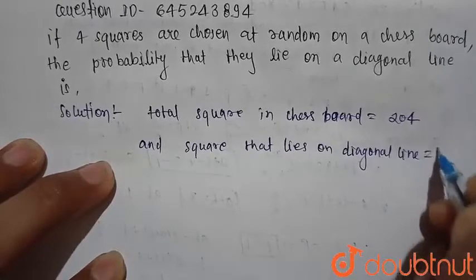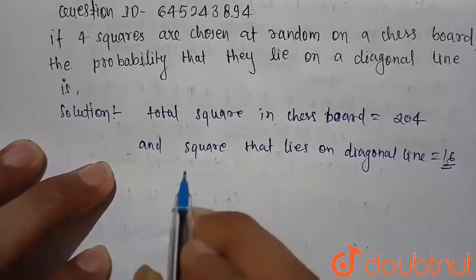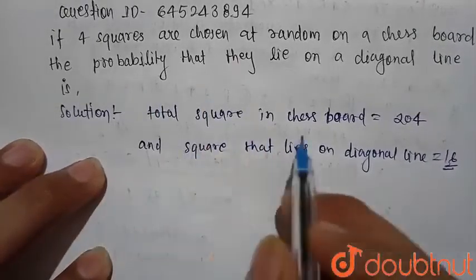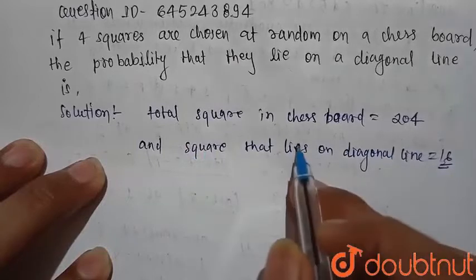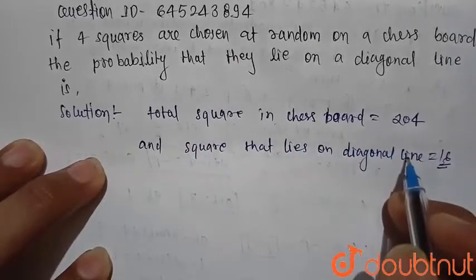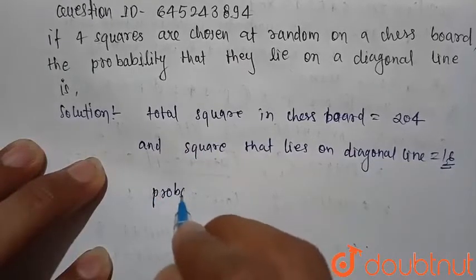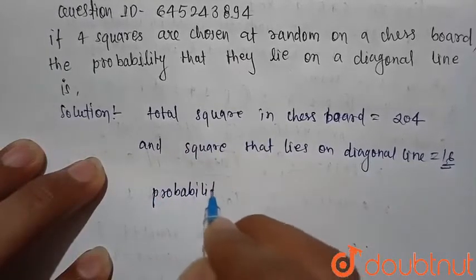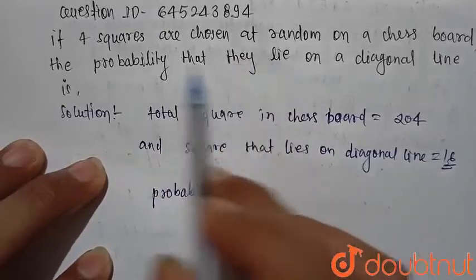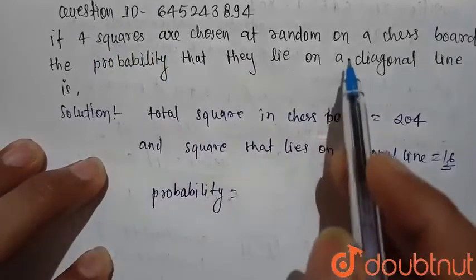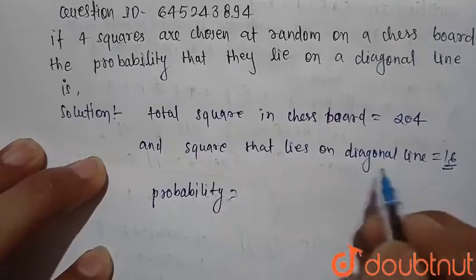This is equal to 16. So here we want to find the probability that the selection of a square is diagonal line. So this is equal to probability of selection of four squares that lie on diagonal line.